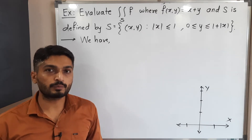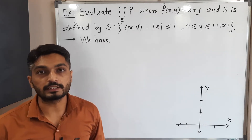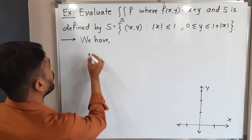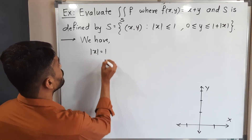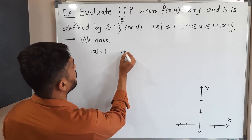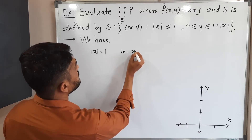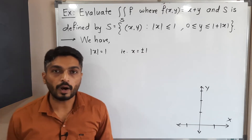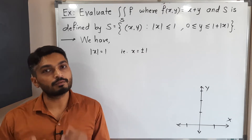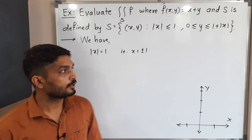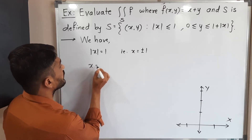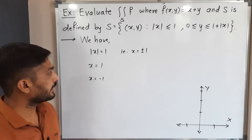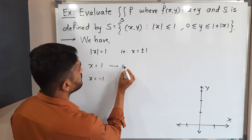When we have an inequality, we first consider the equality to draw the curves. So considering mod X equal to 1, we can write X equal to plus or minus 1. If X equals 1 or X equals minus 1, mod X equals 1. That means we have two curves: X equal to 1 and X equal to minus 1.